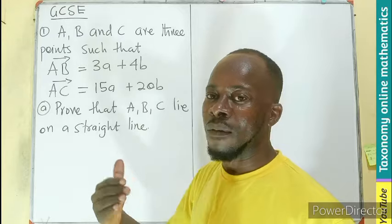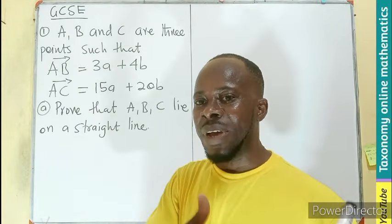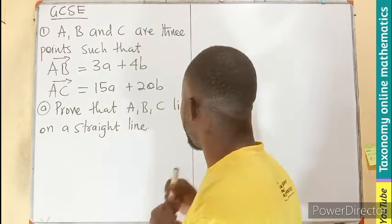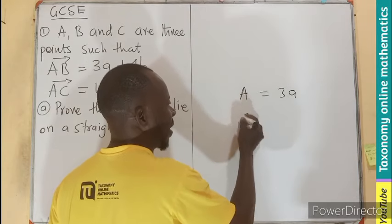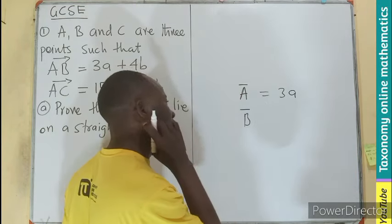Now, how do we prove parallel of a vector? If vectors are parallel, it means one vector is a multiple of the other. Meaning, if vector A is, let's say, 3a and vector B, let me just put a bar on them to show a vector.